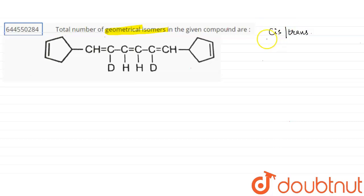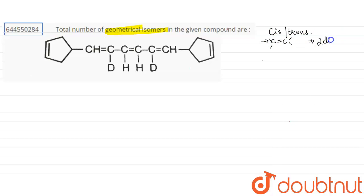We need two things for a compound to show geometrical isomerism: first, a carbon-carbon double bond, and second, two different groups on each carbon of the double bond.